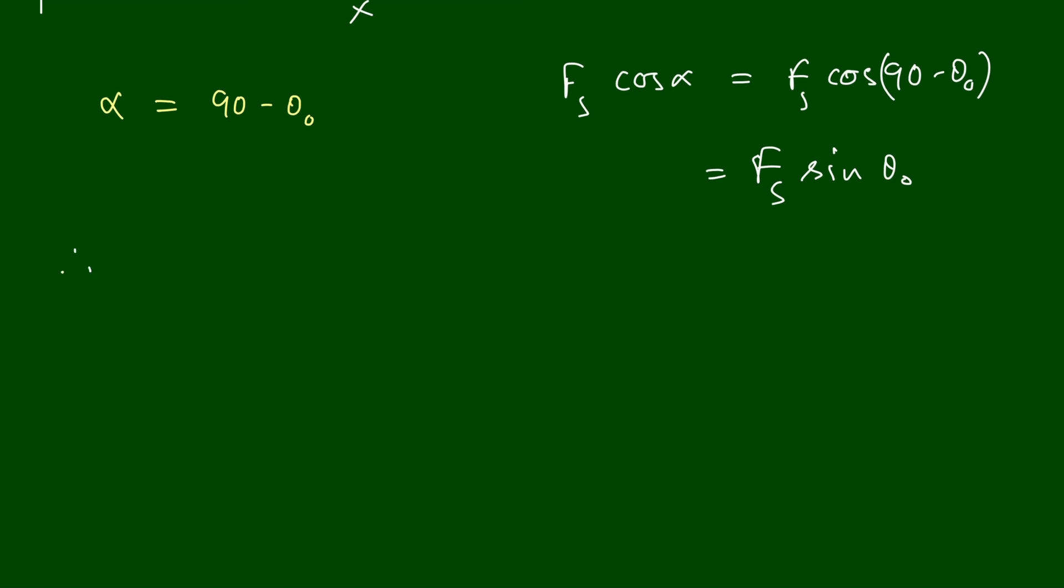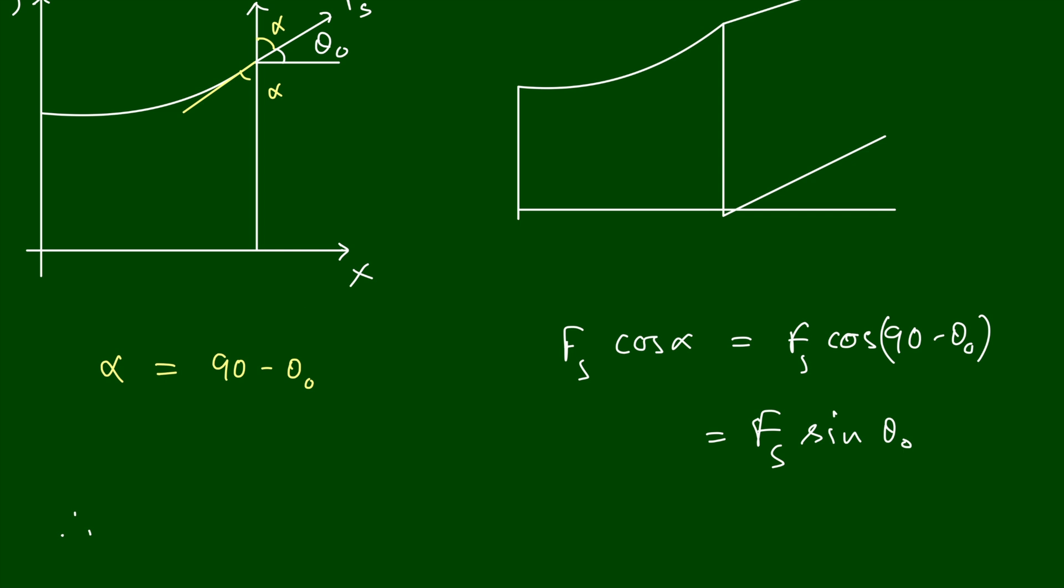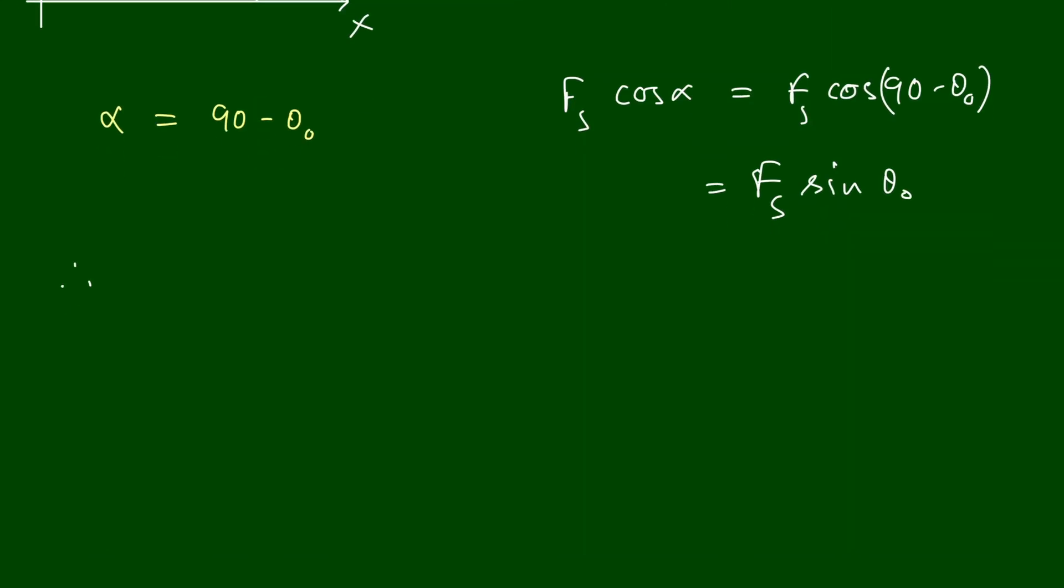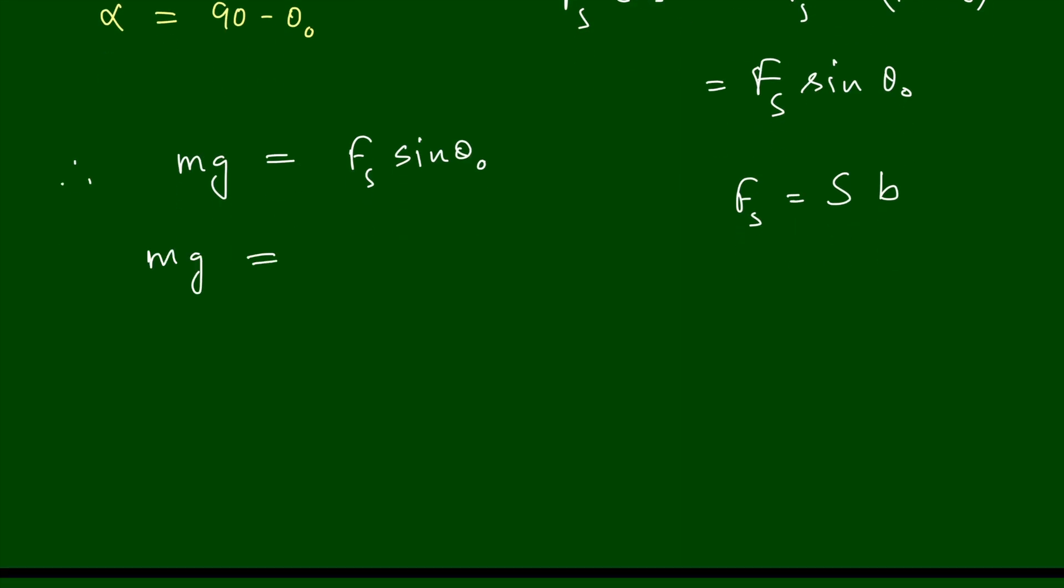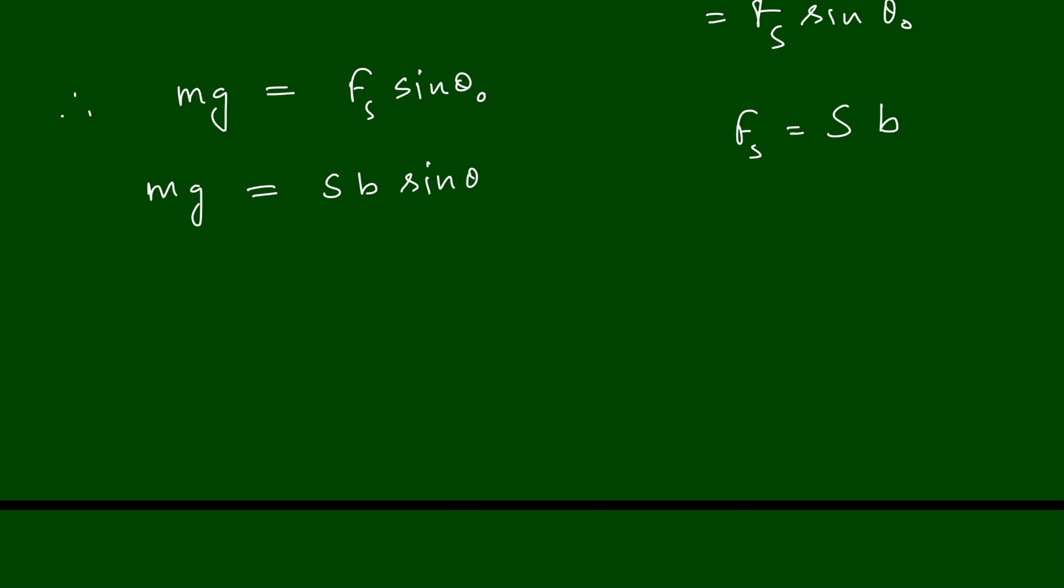We can say weight of the excess liquid - we consider not water, this is the excess liquid present above the surface of liquid. So weight of this liquid must be balanced with the force due to surface tension. So mg is equal to Fs sin θ₀, where Fs is equal to S into b, considering the length b. So mg is equal to S into b sin θ.